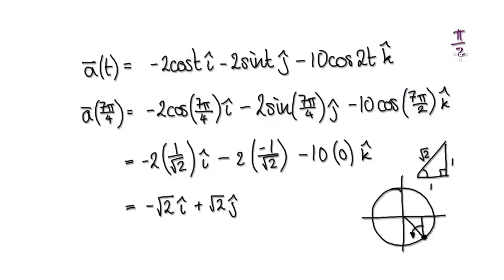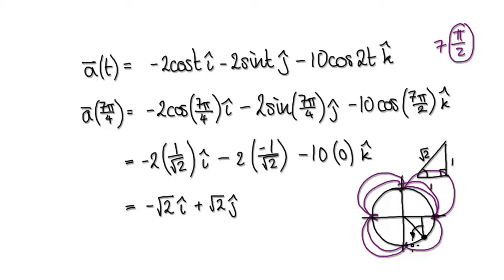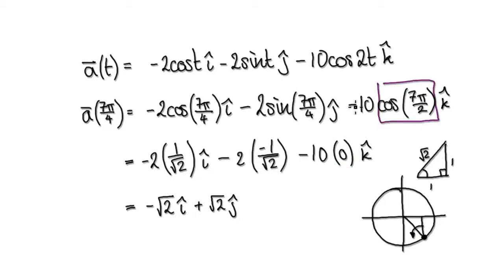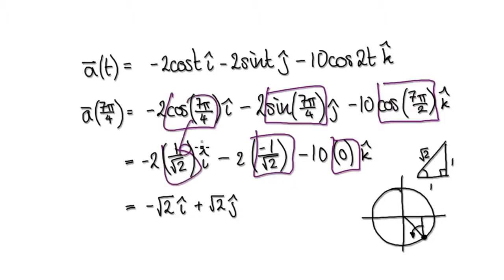Let's imagine it as π/2 times 7 — so 7 lots of 90 degrees. Counting around the unit circle 7 times, the dot would be right here. Remember: sine is concerned with the height, cosine with the base. When the dot is at that position, the base will be 0. So cos(7π/2) = 0, and this whole term disappears. The acceleration vector is then given by the remaining terms.